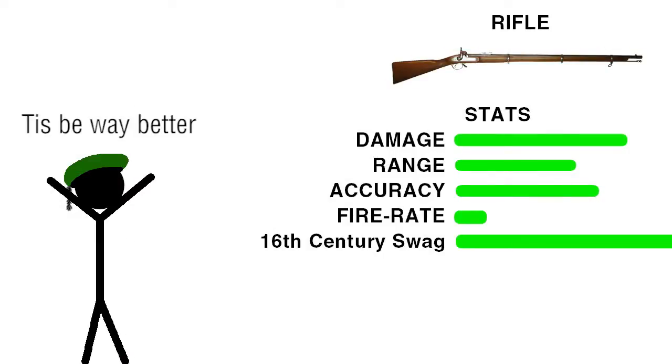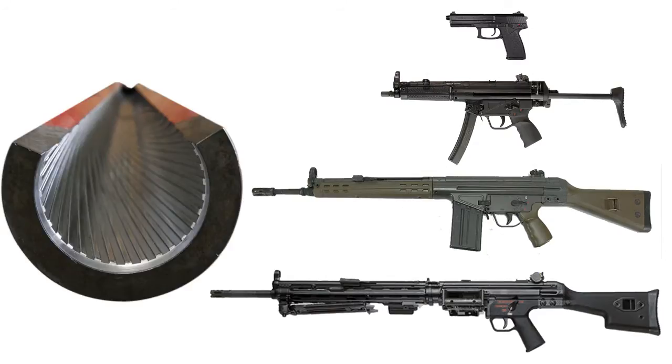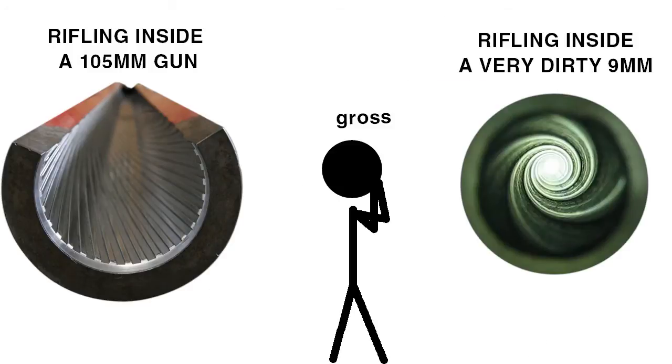A rifle is essentially any gun that has spiraling grooves cut into the inside of the barrel. This process and attribute is known as rifling.